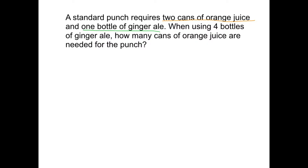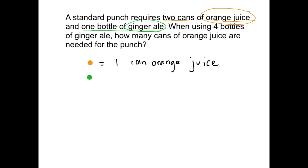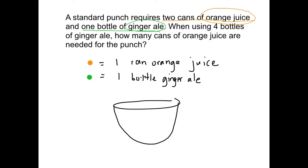Let's think about how we can solve this problem using diagrams. We need to represent orange juice and ginger ale, so let's use counters. We'll use one circle to represent one can of orange juice, and a green counter to represent one bottle of ginger ale. If we're making this punch, let's draw a bowl. Every time we add two cans of orange juice, we add one bottle of ginger ale. This is the part-to-part ratio for this punch: two cans of orange juice and one bottle of ginger ale.